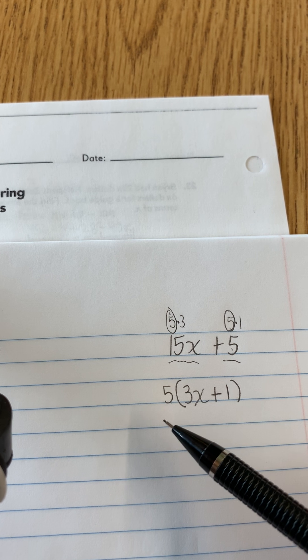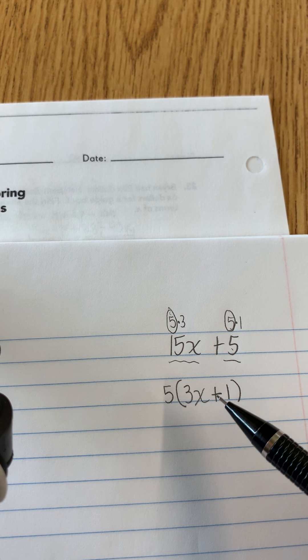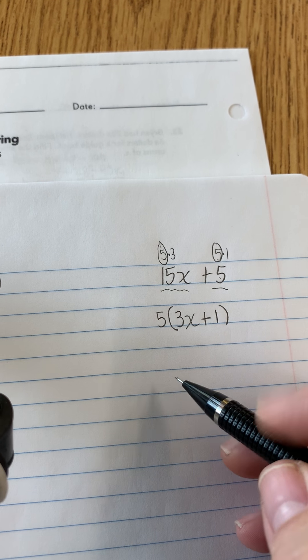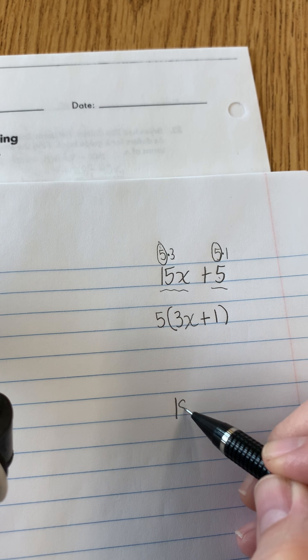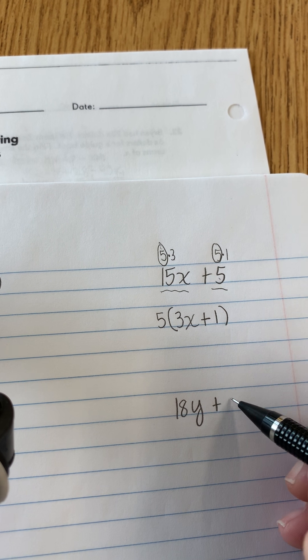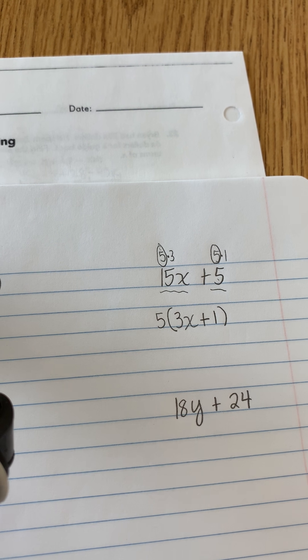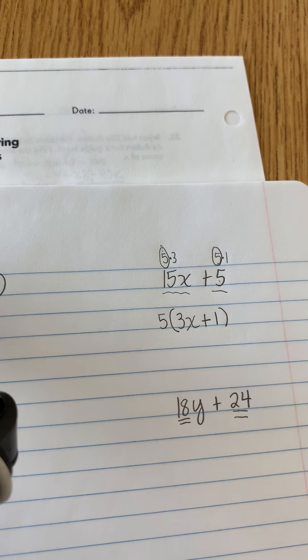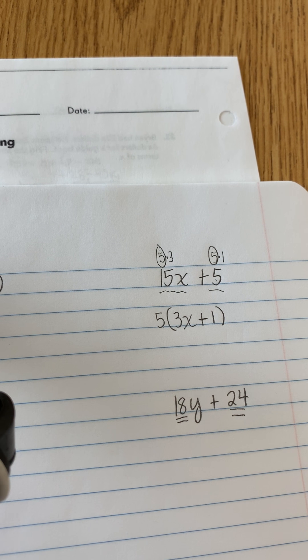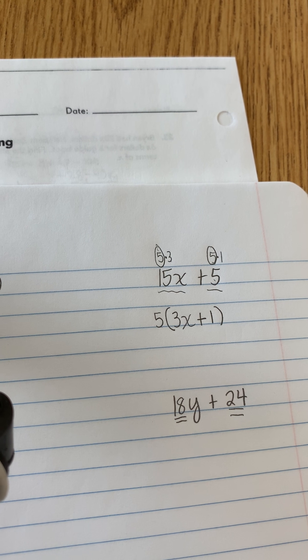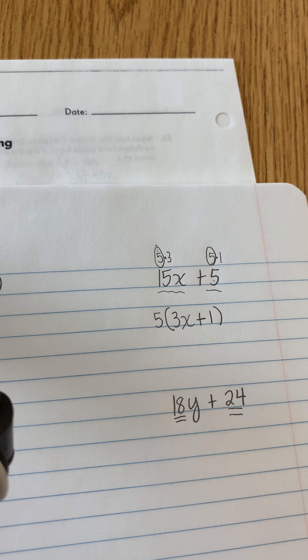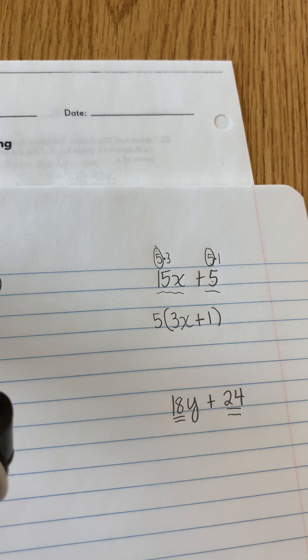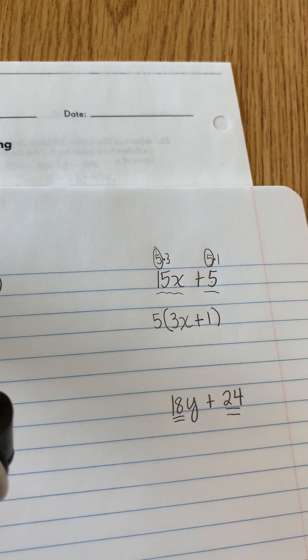It's a little cleaner and when you get into algebra you are going to be factoring things. So let's look at another one. Let's say you've got 18y plus 24. What you're looking at is what is the greatest common factor of 18 and 24. And I know 2 goes into both, 3 goes into both, 6 goes into both, I think that's it. So 6 is our greatest common factor.